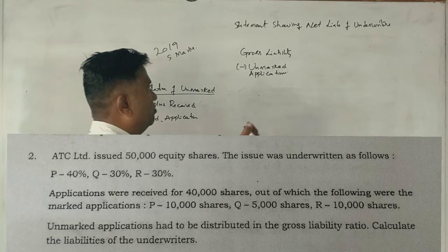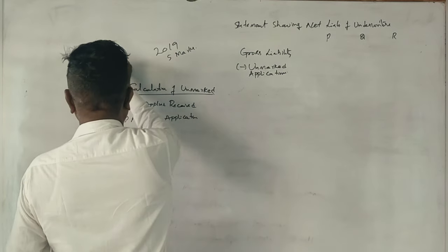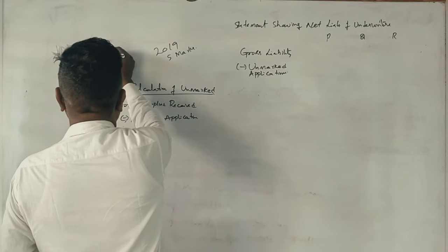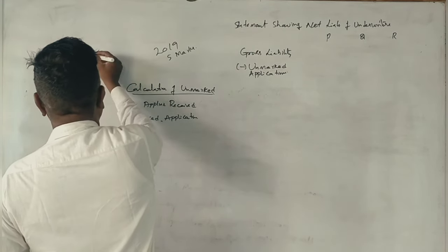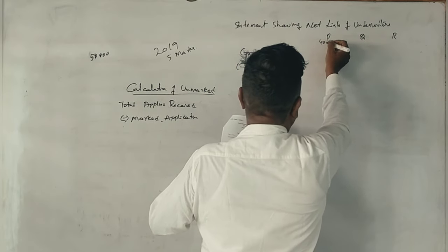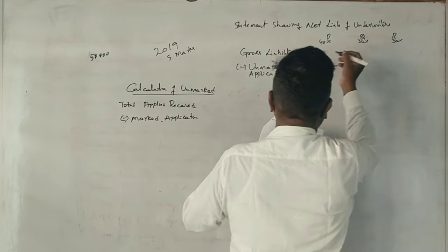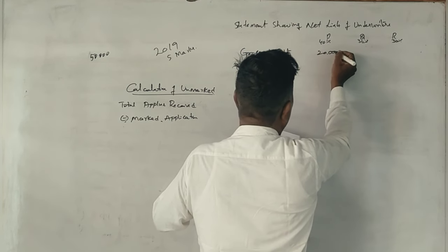P, Q, R. Put to one lakh shares issue mark, correct? One lakh shares, correct? 40% and 30% and 30%.